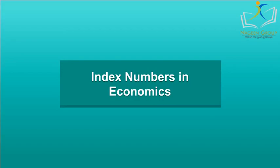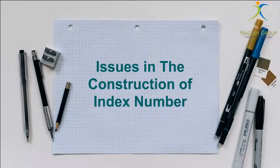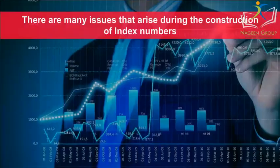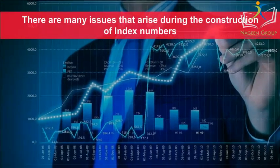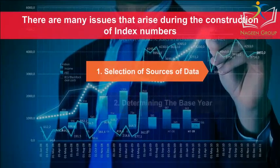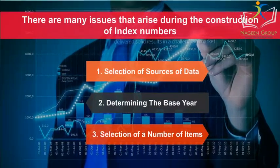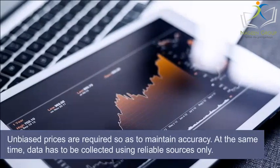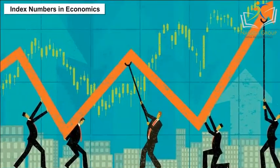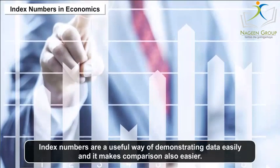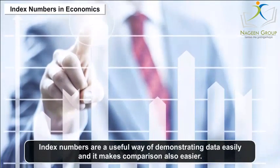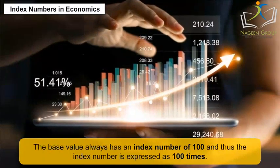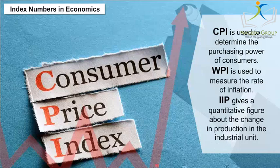Index Numbers in Economics — Issues in Construction: First of all, the purpose of the index should be clearly defined, else it would be a wastage of time and efforts. Issues that arise during construction include selection of sources of data, determining the base year, and selection of a number of items. Unbiased prices are required to maintain accuracy, and data must be collected using reliable sources only. Index numbers are a useful way of demonstrating data easily and making comparison easier. The base value always has an index number of 100, and thus the index number is expressed as 100 times. CPI is used to determine the purchasing power of consumers.